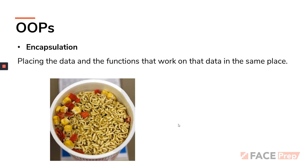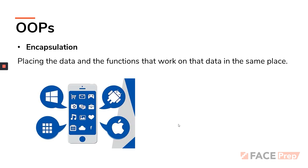One more example is cup noodles. A cup noodle contains all the ingredients. If you want to cook noodles normally, you manually put all the ingredients in a dish and go through the process. But with cup noodles, you just pour hot water, keep it for some time, and when you open it your noodles are ready. This is again an example of encapsulation. And one last example is certain apps.